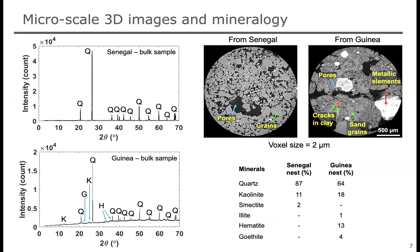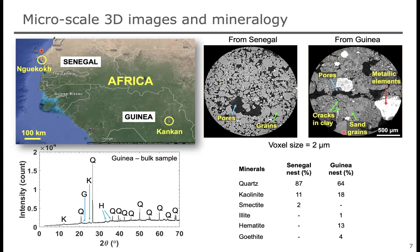We did some XRD — X-ray diffraction analysis — and this gives the same indication. For Senegal, all the signal is Q, meaning quartz, which is sand particles. But for Guinea, we see many different signals from kaolinite, which is a clay, and also some hematite. We can see different types of clay and a larger quantity of clays. This is quite obvious actually if you look at satellite imagery: Senegal looks quite sandy and brownish, so you can expect sandy particles. Guinea has a greenish area, indicating clay because you need moisture and nutrient retention capacity for vegetation to grow.